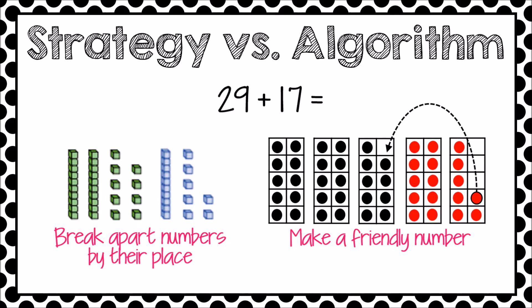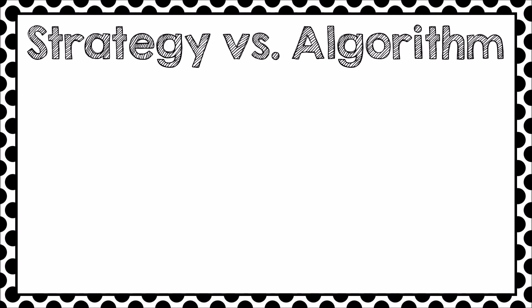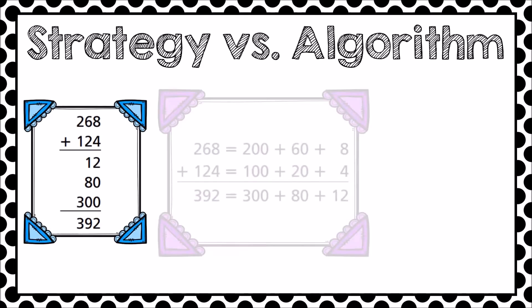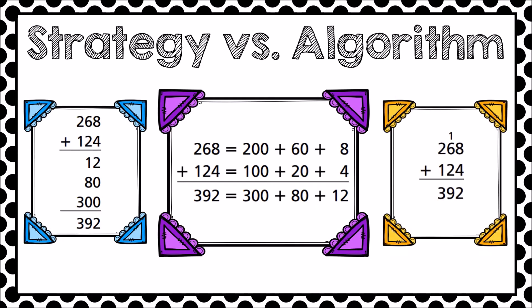In second grade, students are asked to fluently add and subtract using strategies based on place value understanding and relationships between numbers. In third grade, students are asked to fluently add and subtract using strategies and algorithms based on place value, number relationships, and the relationship between addition and subtraction. An algorithm is a prescribed set of procedures that elicits a correct answer when executed correctly. Traditional algorithms tend to be digit-oriented with a de-emphasis on place value or the number as a whole.